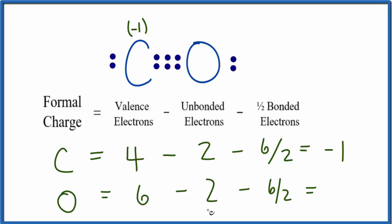Six minus two is four. Four minus three is plus one. So we'll put these formal charges up here for oxygen, and those are the formal charges for CO.